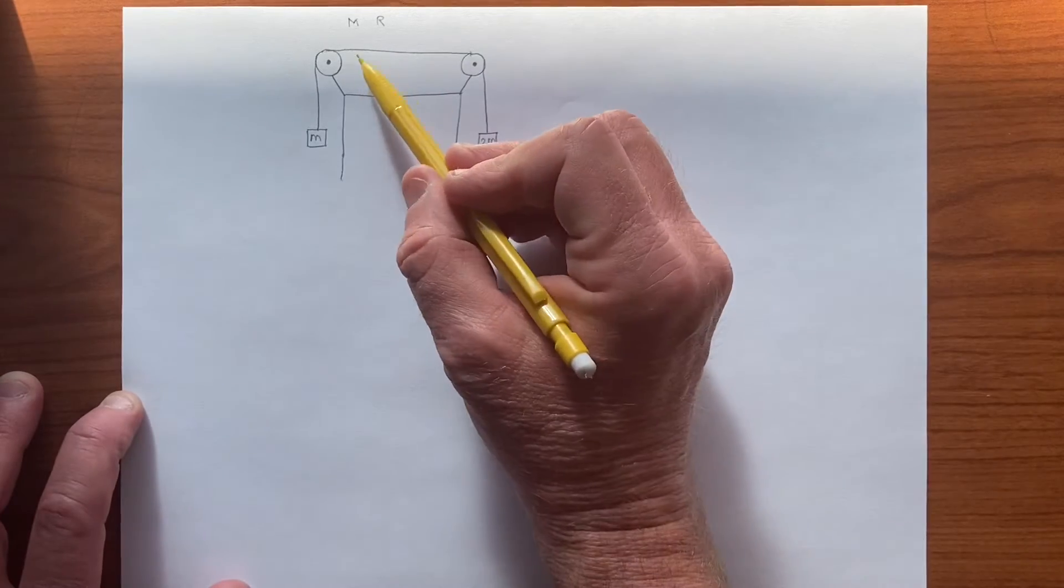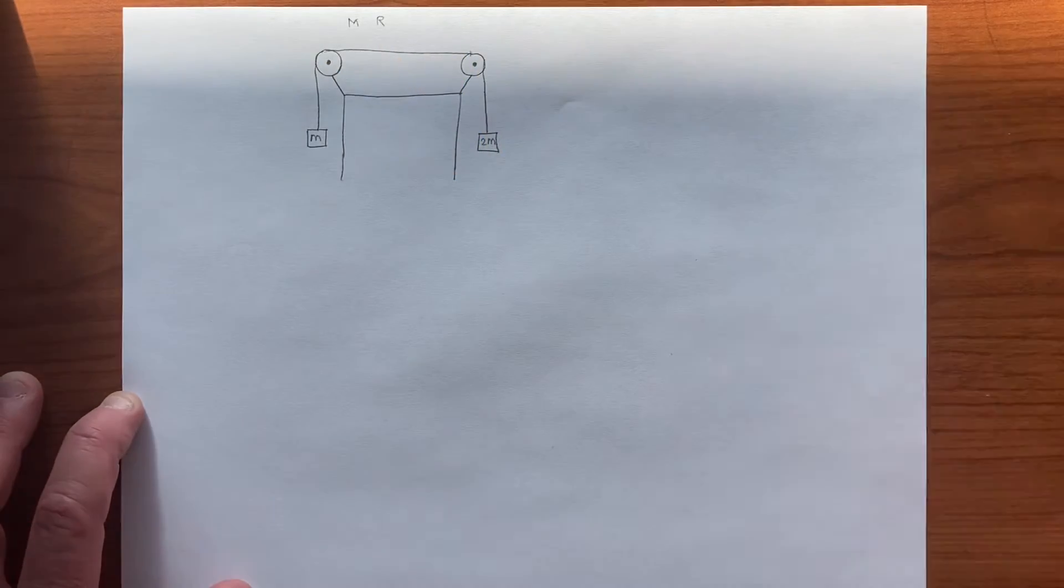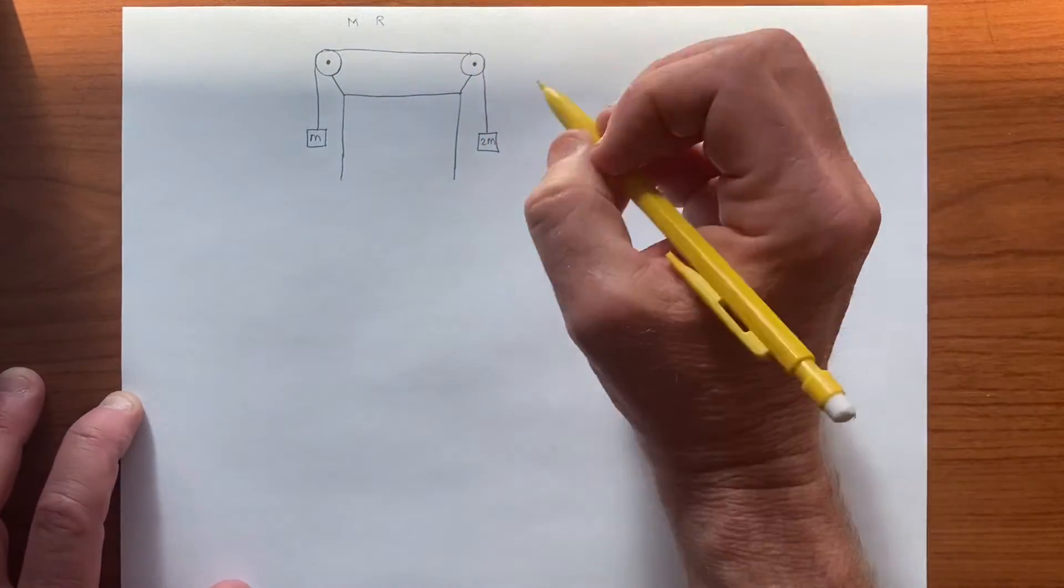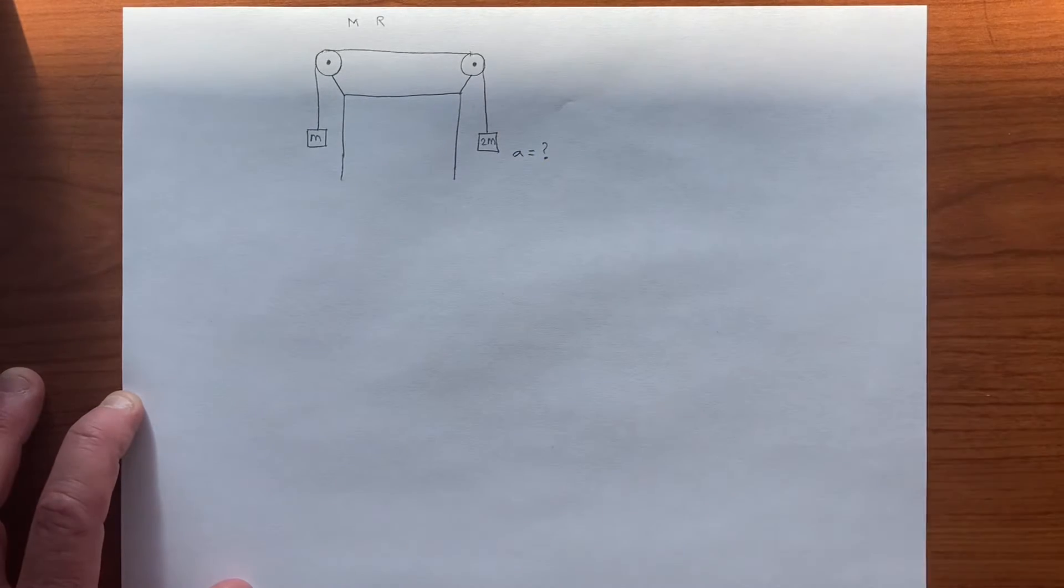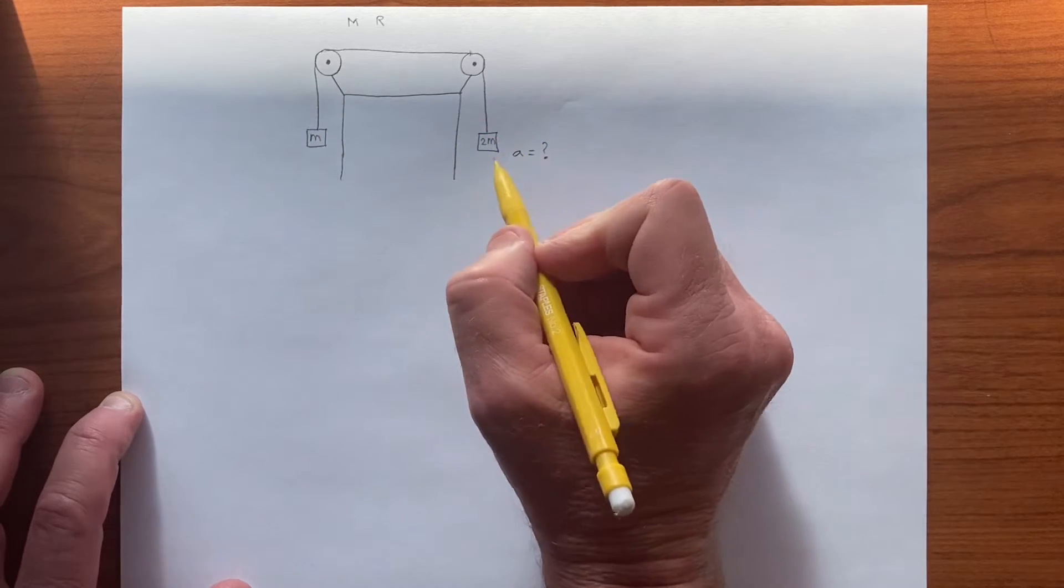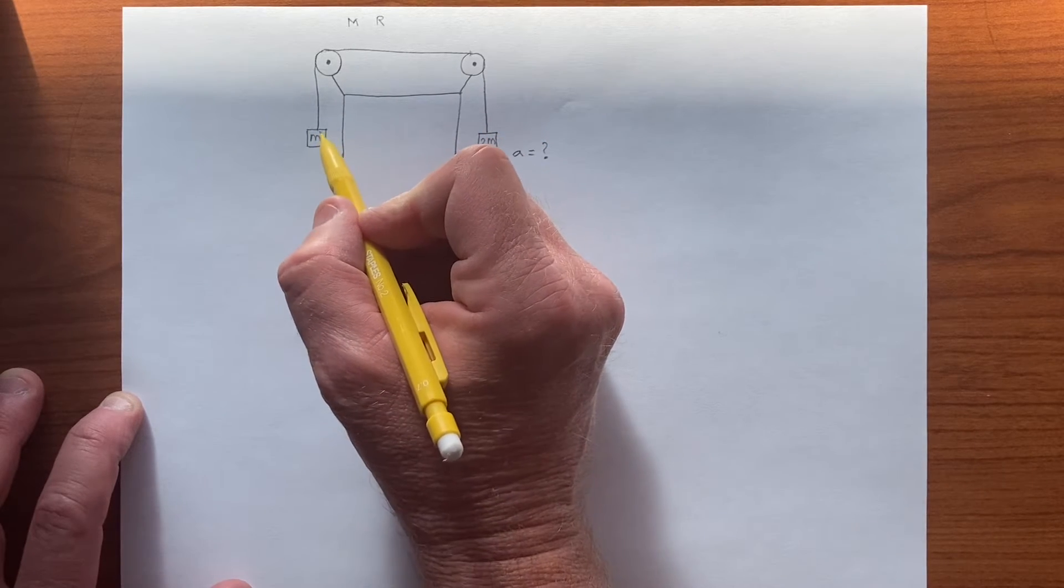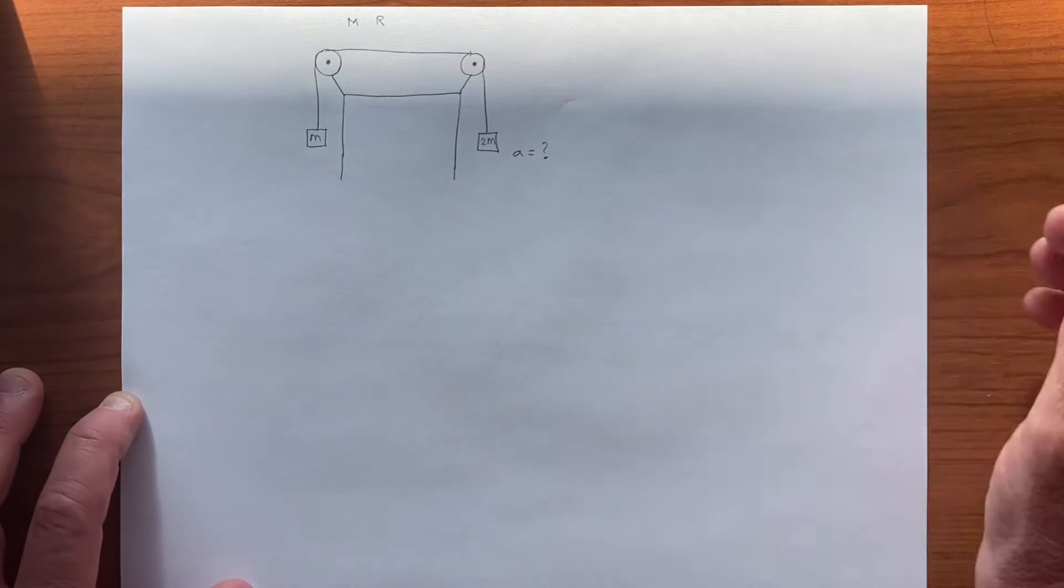And so clearly there will be rotation this way, and so we want to find the linear acceleration of this object here. So, of course, there's only one linear acceleration, so it will be the same as this one. This one will accelerate upwards, this one accelerates downwards.